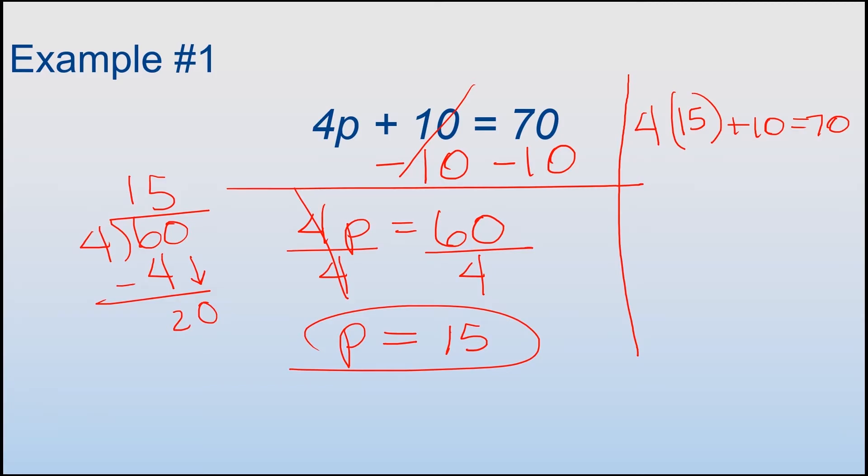So just to make sure this is clear, all I did was write the original problem that was out here in blue, except I didn't write the P again. I put the actual value that I think P is. So now I'm gonna solve this, and if whatever I get after working out all the numbers on this side of the equal sign equals 70, then that means my 15 is correct. If I don't get 70, that means my 15 is incorrect. So 4 times 15 is 60, and I want to add 10. 60 plus 10 is 70, so 70 does equal 70, so that means I did solve that one correctly.